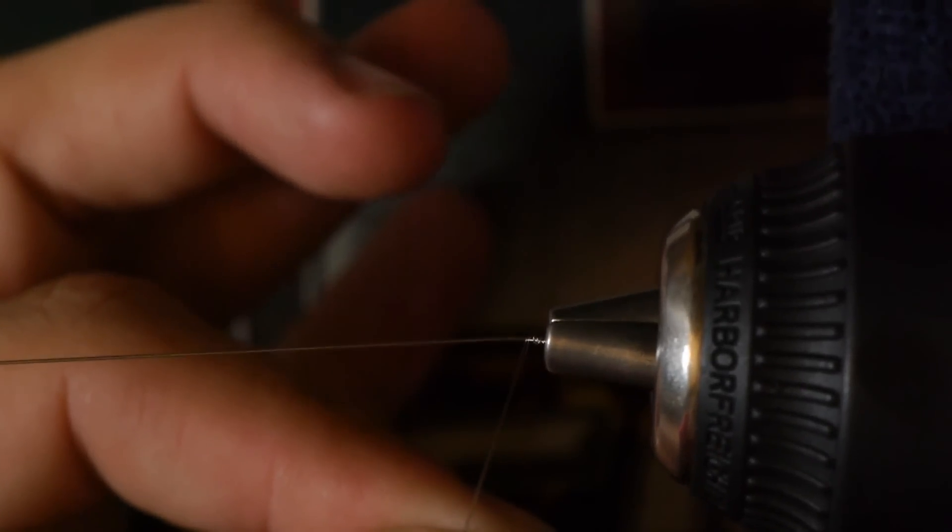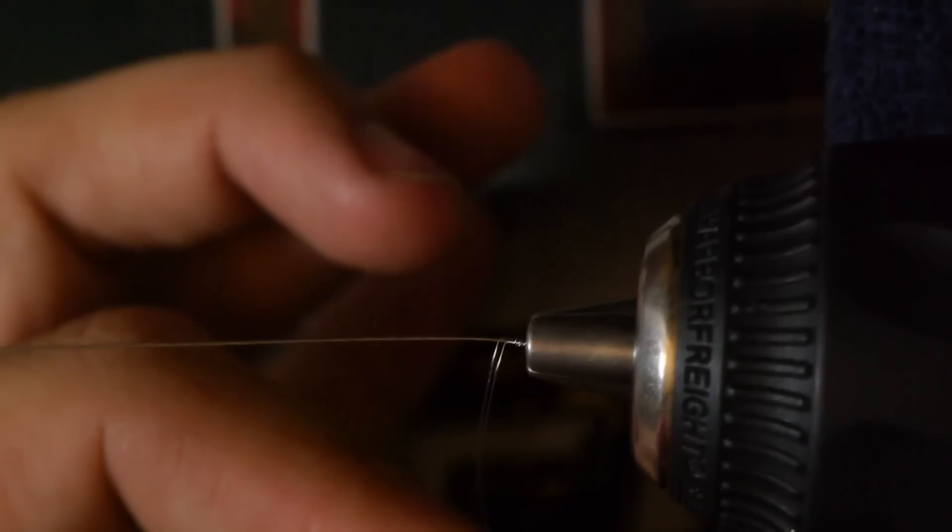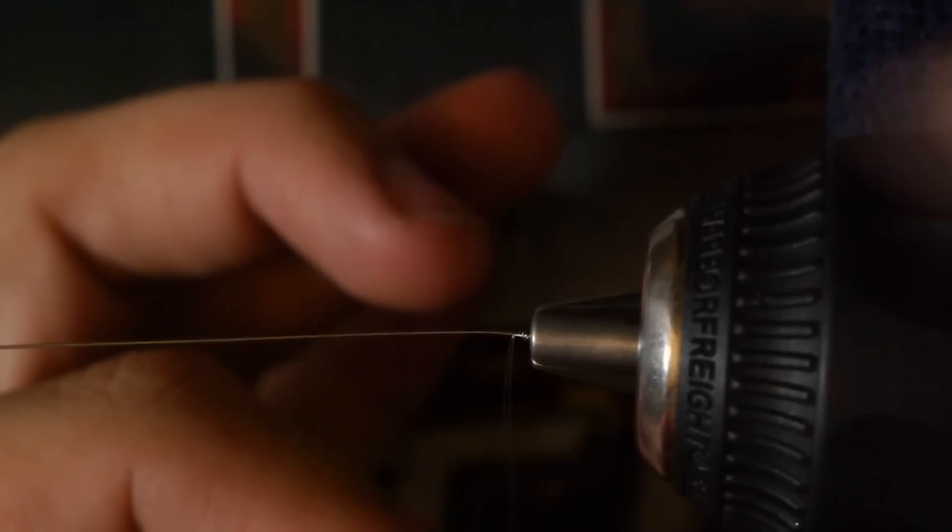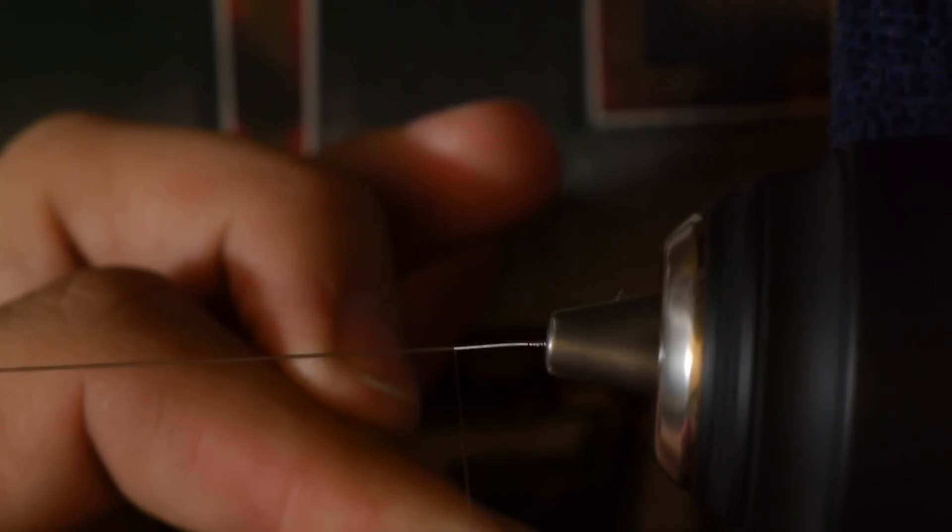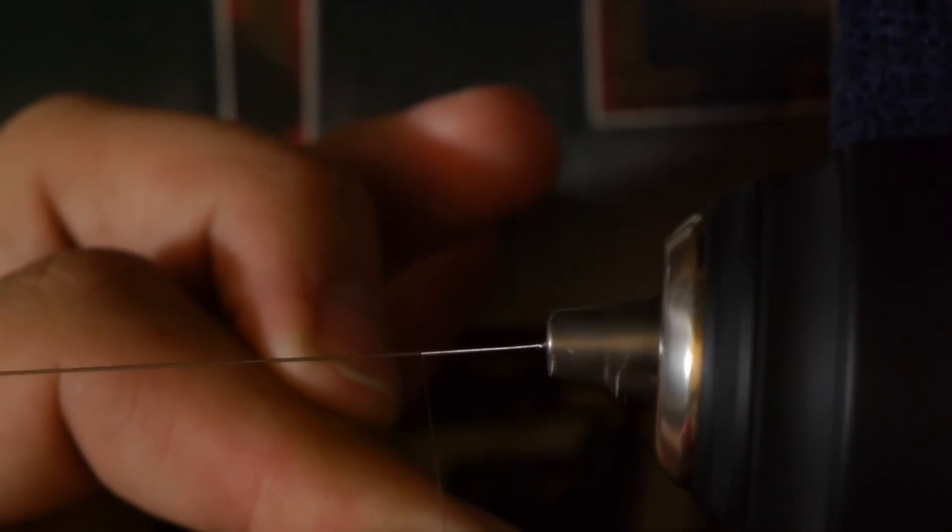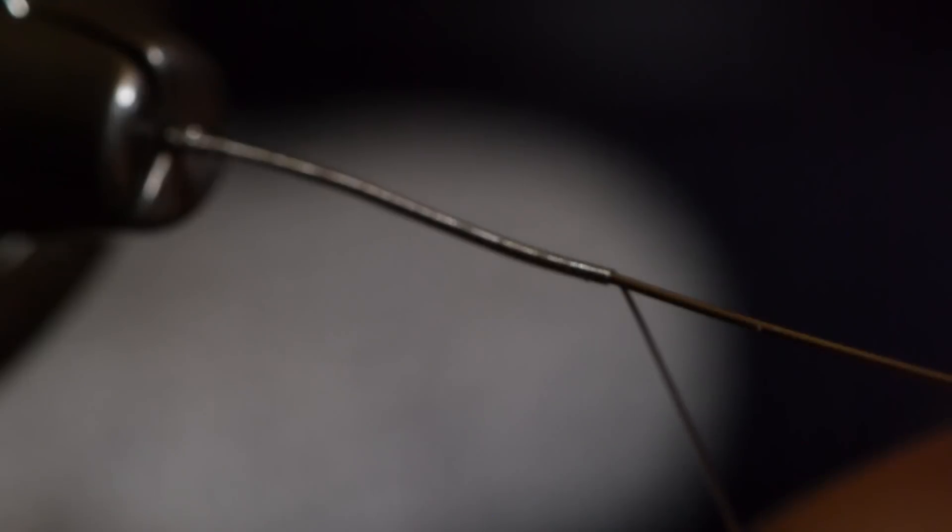Once I get those two wires running parallel to each other, I'll start to clapton them as tight as I can together. This is called parallel claptoning. I'll do this for about an inch. Then I'll take that green clip and I'll clamp on top of that parallel clapton piece that's around the core wire.